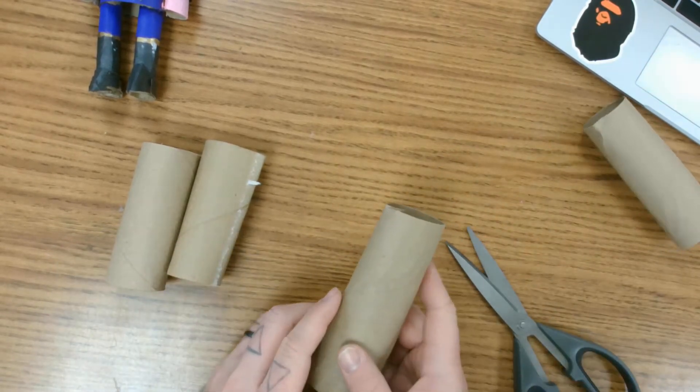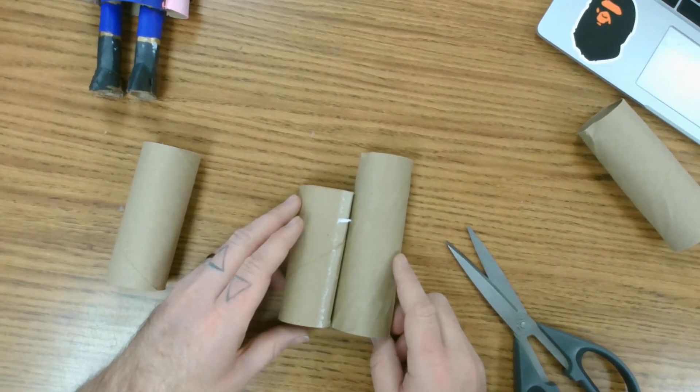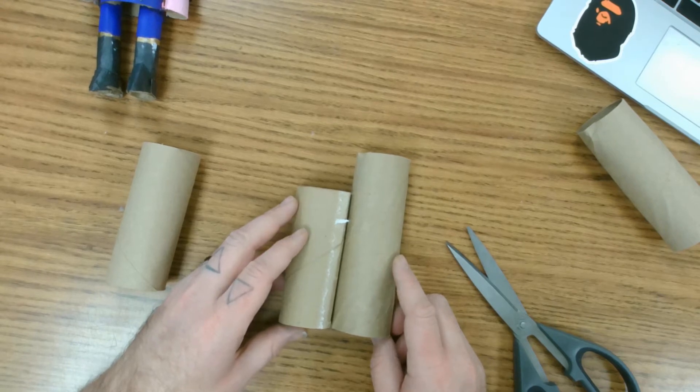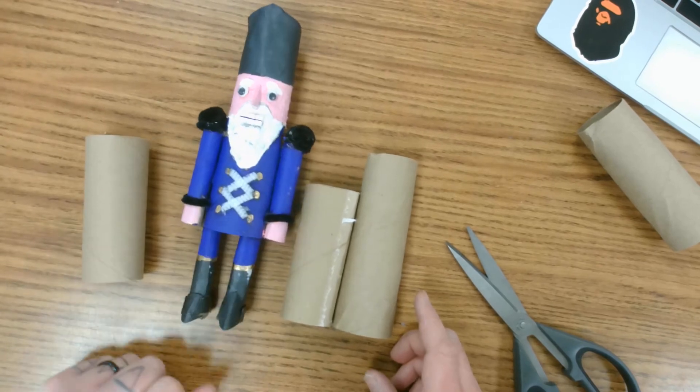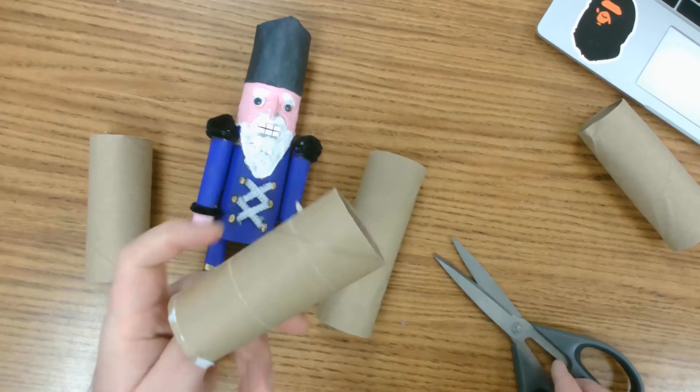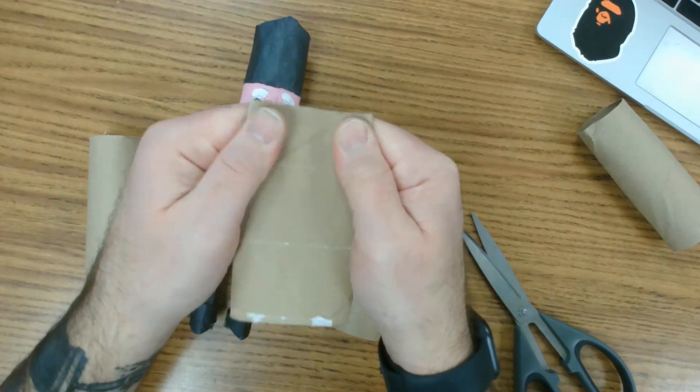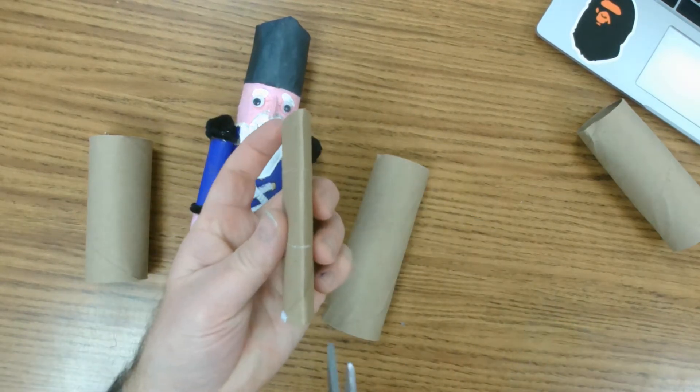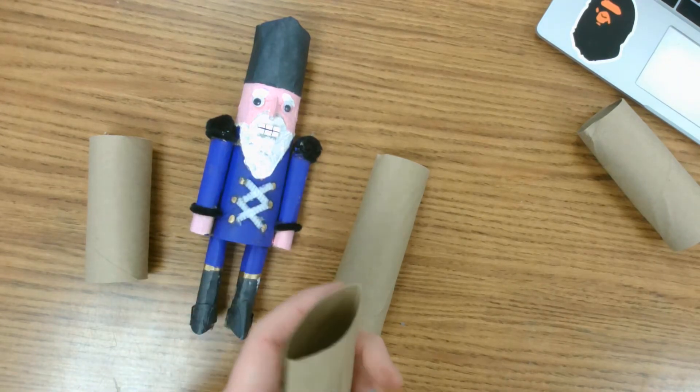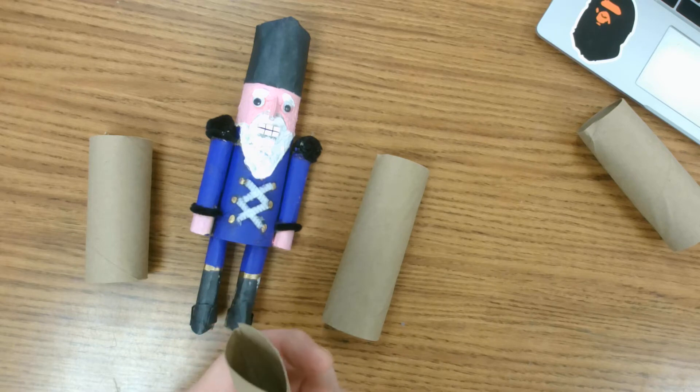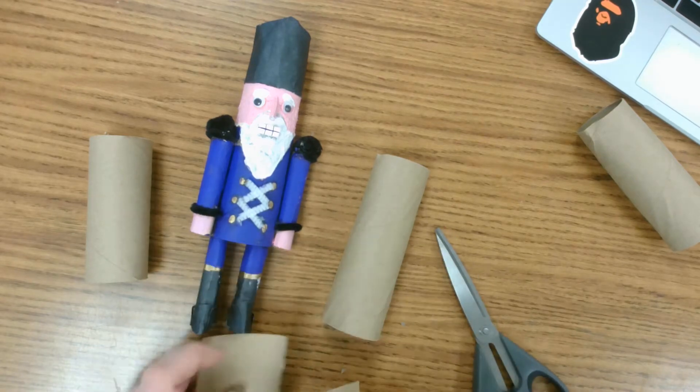You'll see that even half of one of these tubes is still larger than a toilet paper tube, and we want that. In order to get the arms and legs made, we're actually going to take our toilet paper tubes and cut them in half. What I do is I squish them like this, and then you're going to cut right on that fold, so one and two. You can do that to both of your toilet paper tubes.